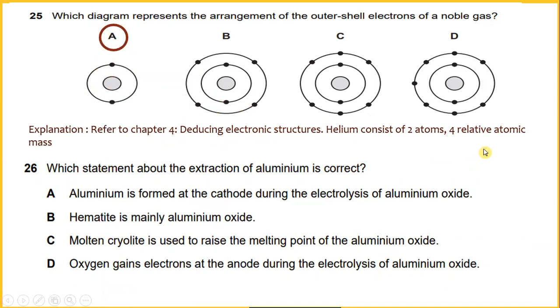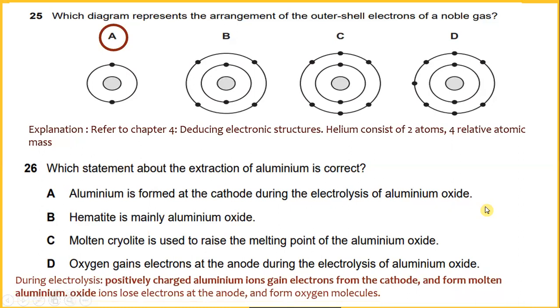Which statement about the extraction of aluminium is correct? Aluminium is formed at the cathode during the electrolysis of aluminium oxide. During electrolysis, positively charged aluminium ions gain electron from the cathode. And for molten aluminium, oxide ions lose electron at the anode and form oxygen molecule. So the answer will be A.